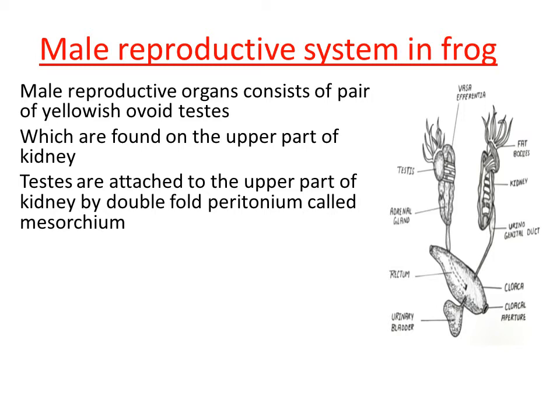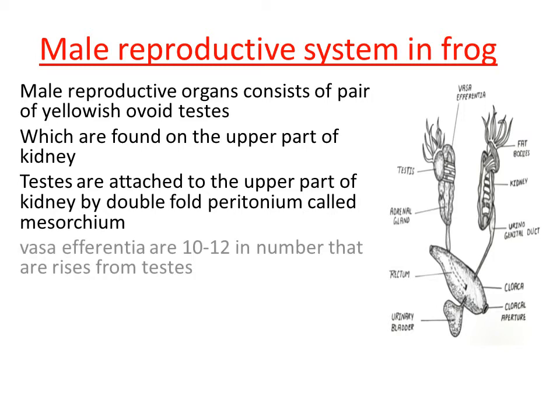Because of the mesorchium, testes are attached with the kidney. You can observe in the diagram — at the point where the testes get attached with the kidney, we have a double fold peritoneum called mesorchium. One more organ present in the male reproductive system is vasa efferentia. There are nearly 10 to 12 vasa efferentia that come out from the testes.